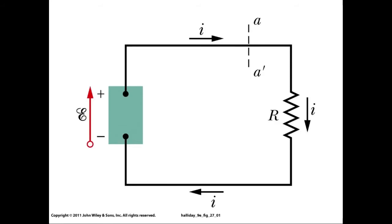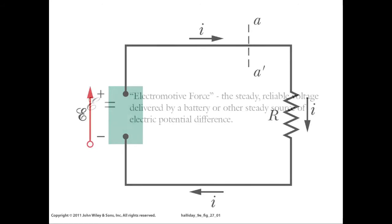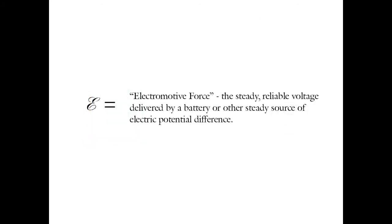There's a symbol introduced in the chapter for the electric potential difference established by the battery — the curly ε — which is short for electromotive force, or EMF. It's an old term from before we understood what batteries were actually doing. When people were playing around with these electrochemical cells in the 1800s, they knew they had some electromotive force that would drive charge through the system, but didn't know what the force was until later connections to electricity and magnetism were made.